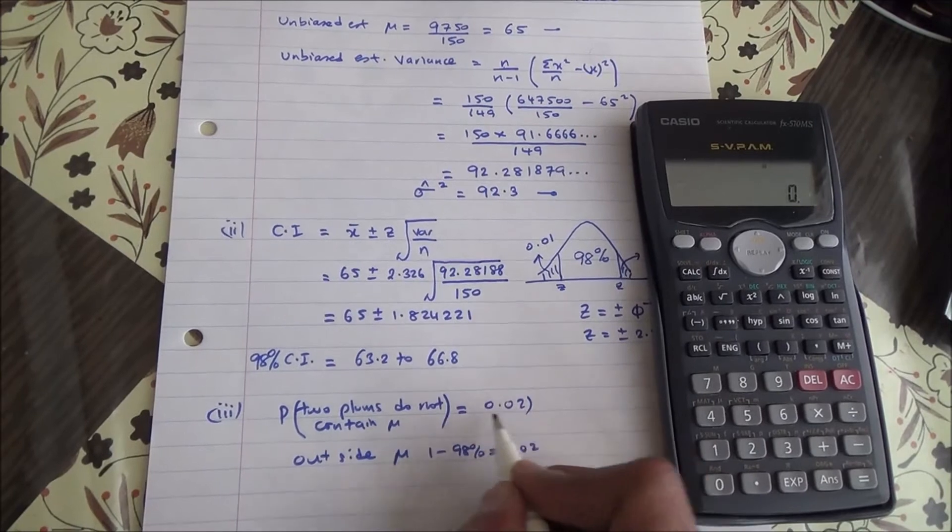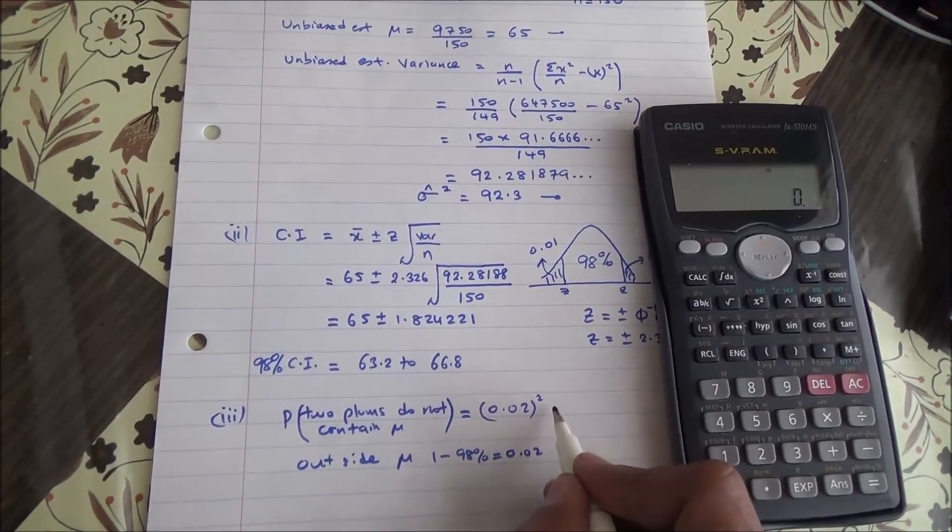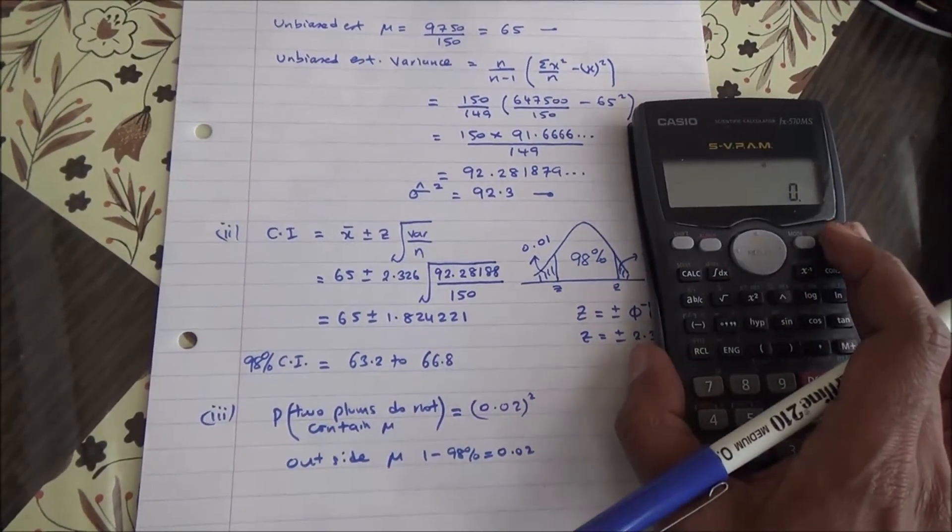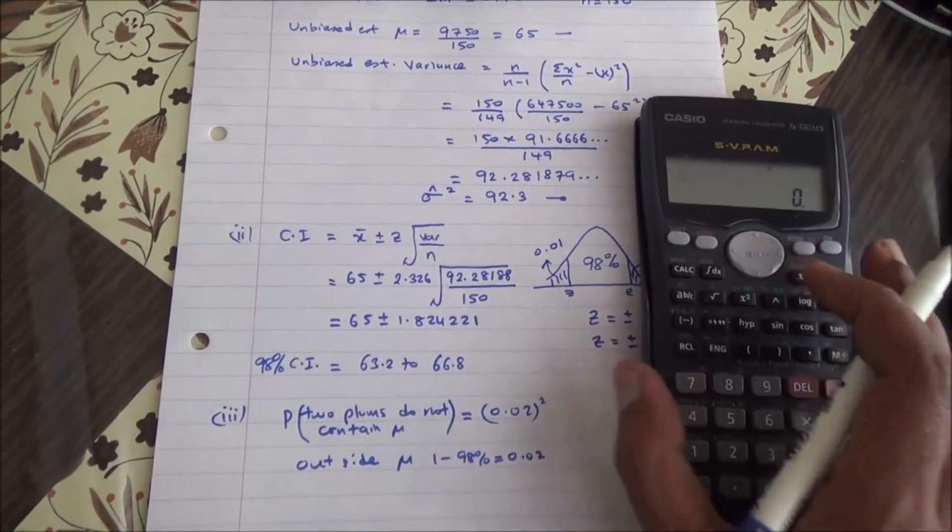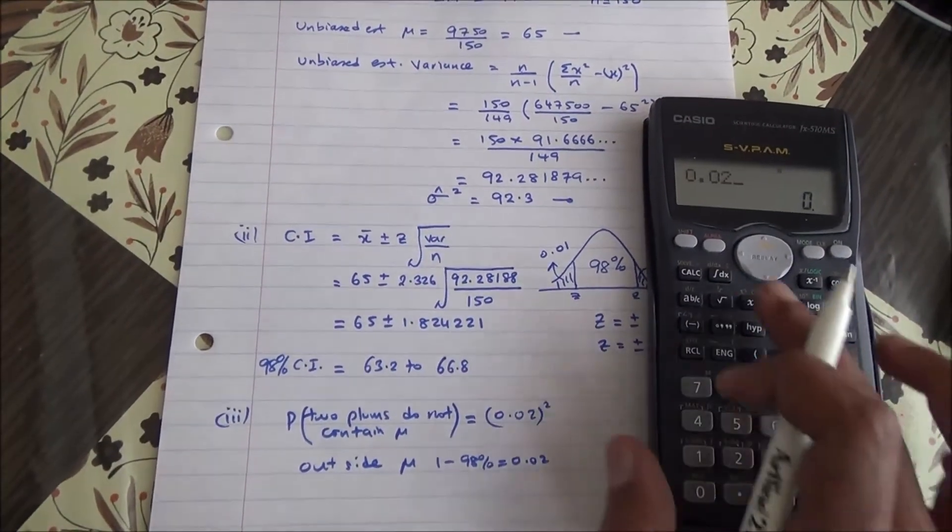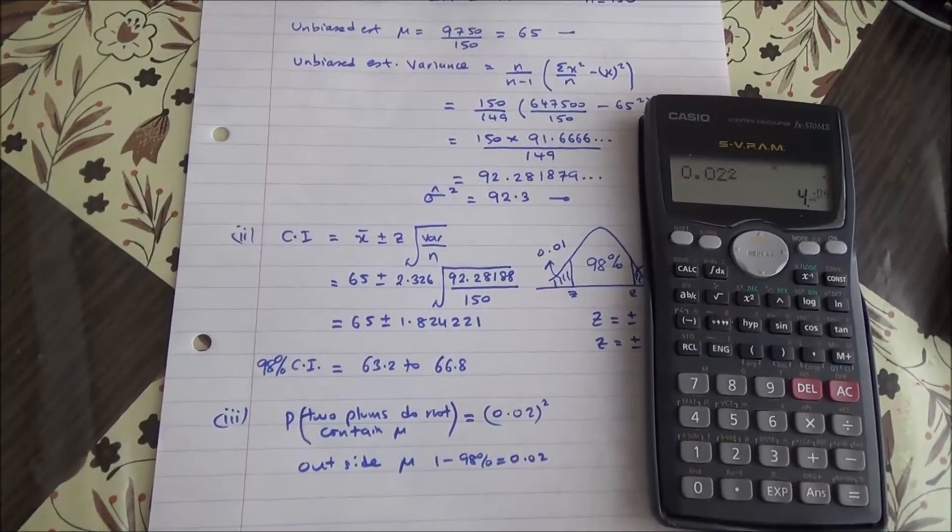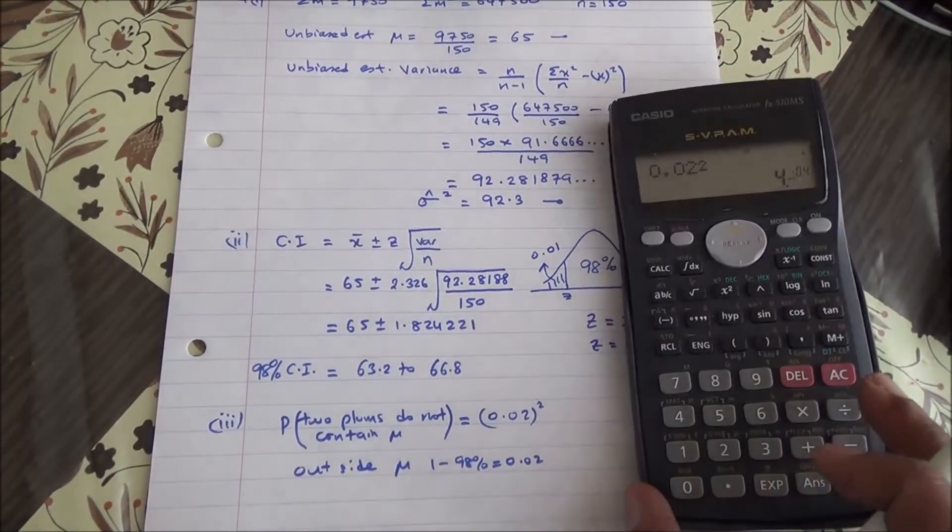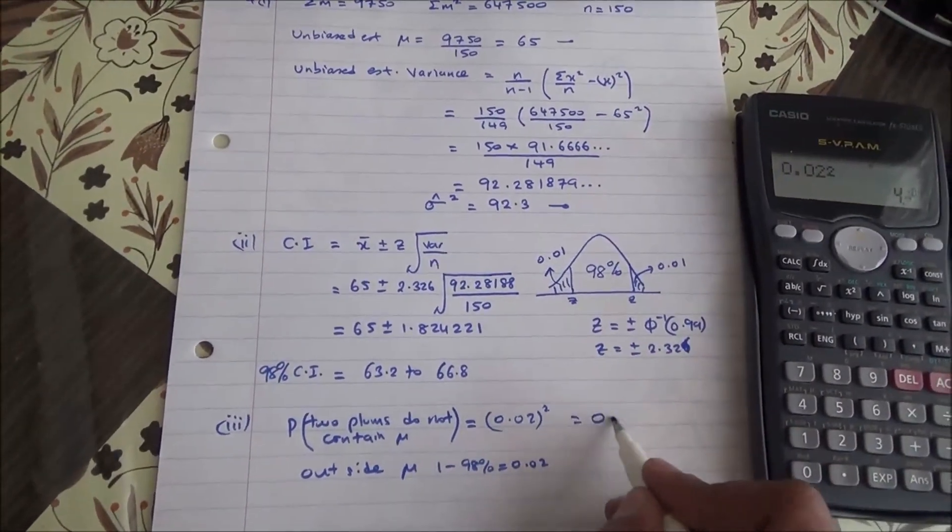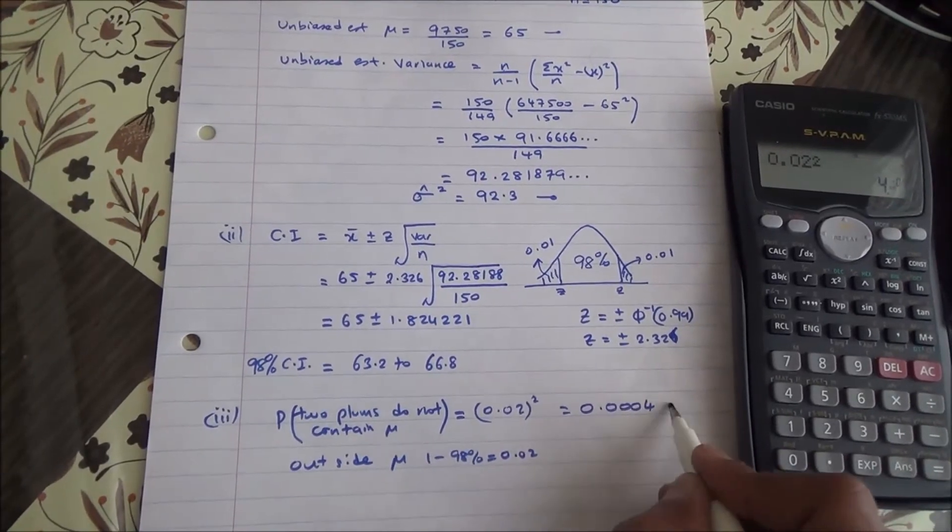So 0.02 times 0.02, because that's the probability that they won't fall within the 98% confidence interval. 0.02 to the square, which gives us 0.0004, so the answer should be this.